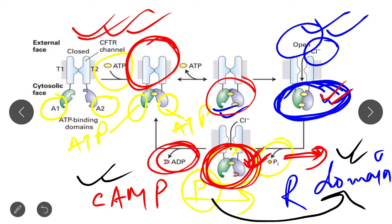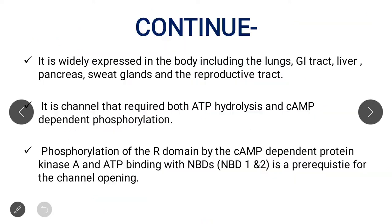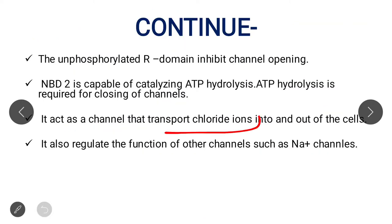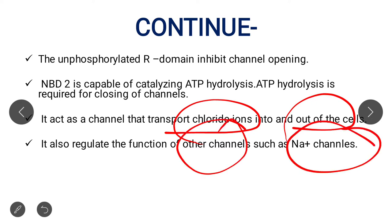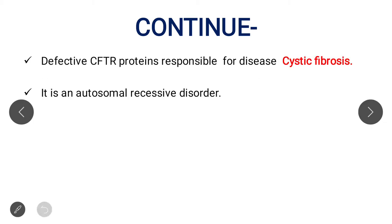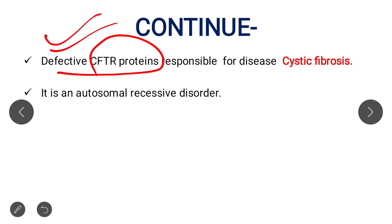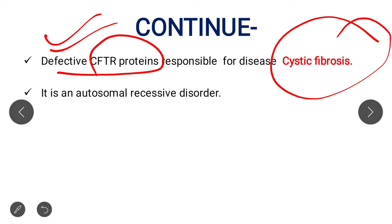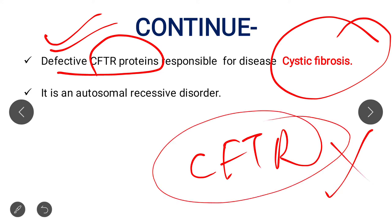CFTR also transports chloride ions into and out of the cell and also regulates the function of other channels, including sodium ion channels. If there is any defect in the CFTR protein, it leads to a disease known as cystic fibrosis, which is an autosomal recessive disorder.